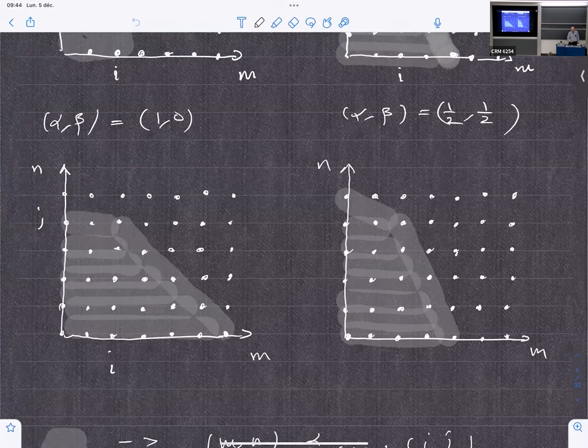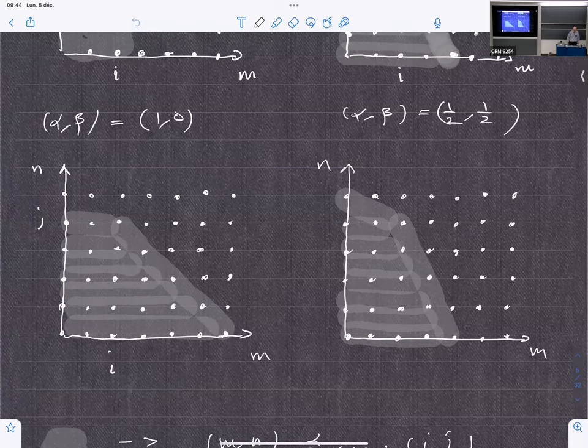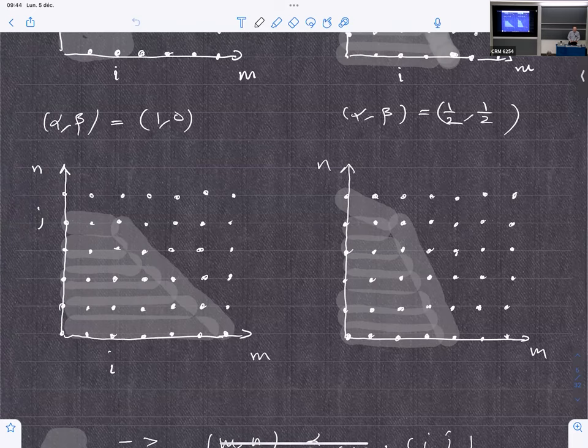As I said, the goal is to replace this V in P-polynomial schemes by V_ij, which is bivariate, depends on two variables, and we'll move to defining the bivariate P-polynomial association scheme.